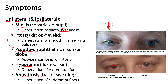Not all of these symptoms may be present in a patient with Horner's — perhaps one or several. The presentation and symptomology may be highly dependent upon whether it is a central, preganglionic, or postganglionic type of Horner's syndrome.